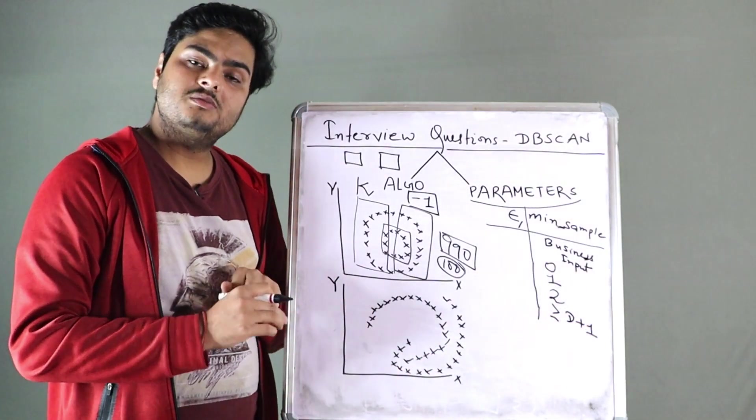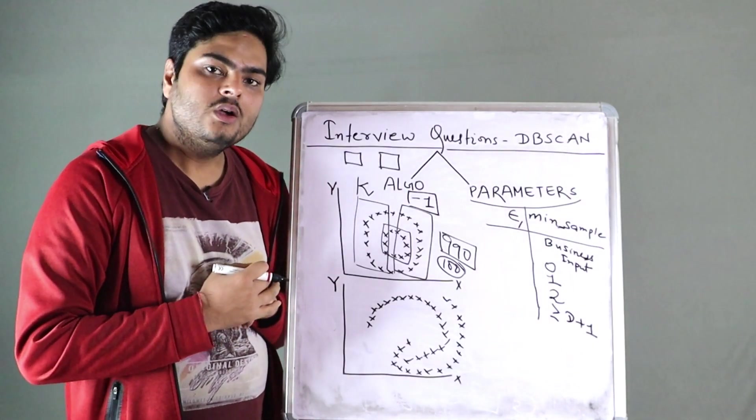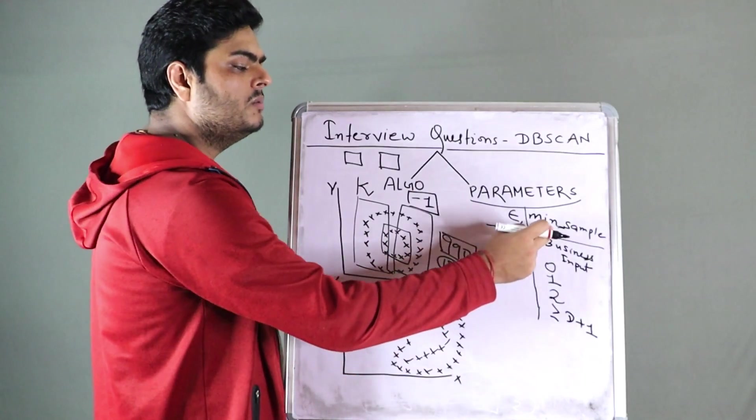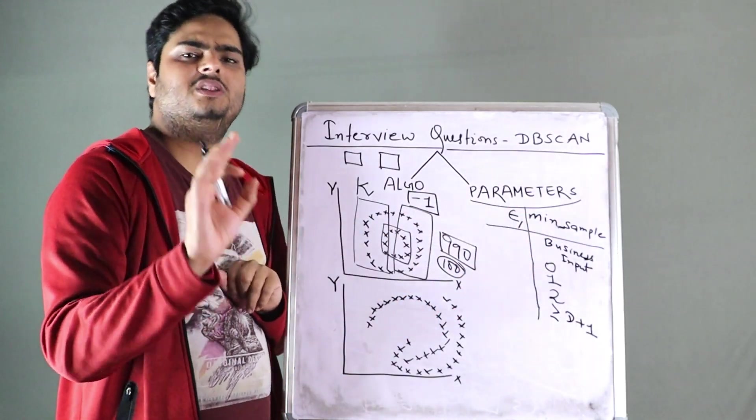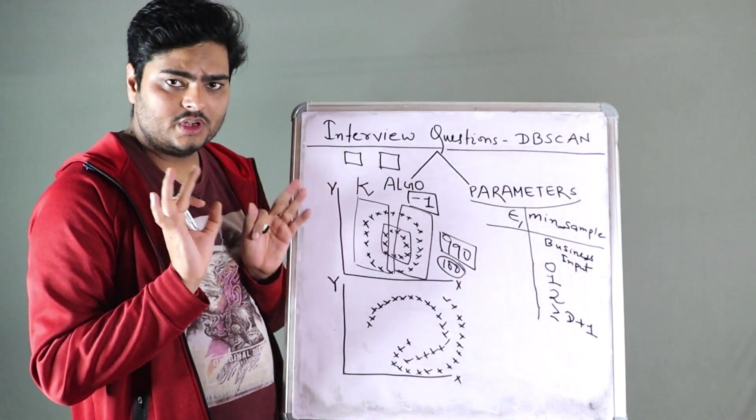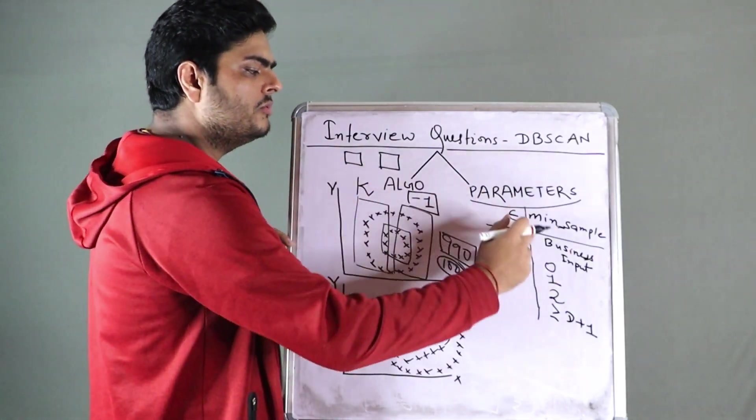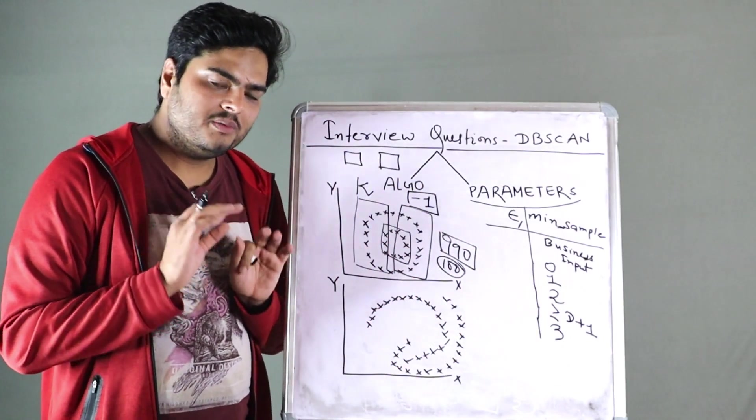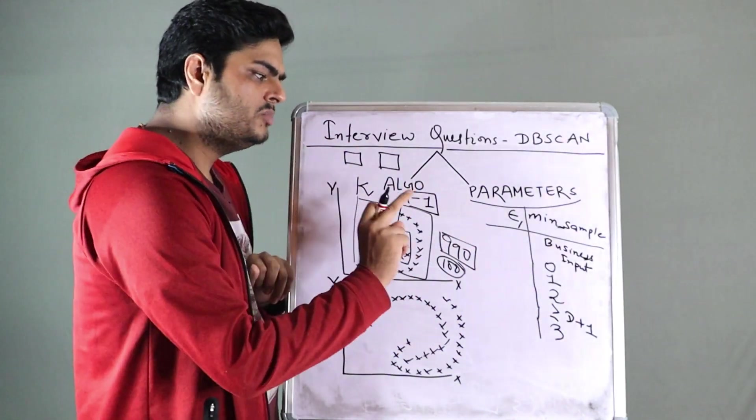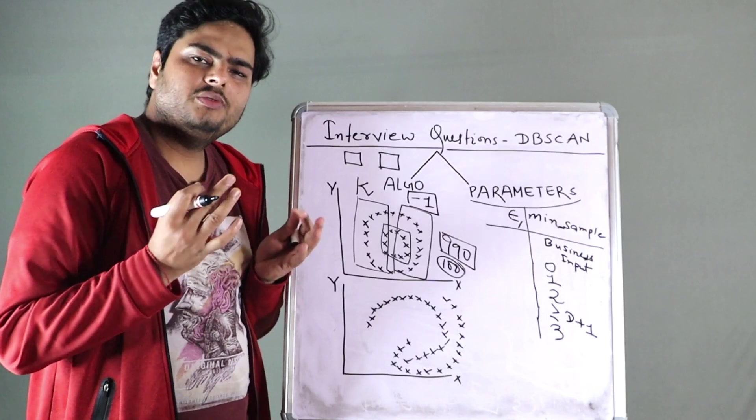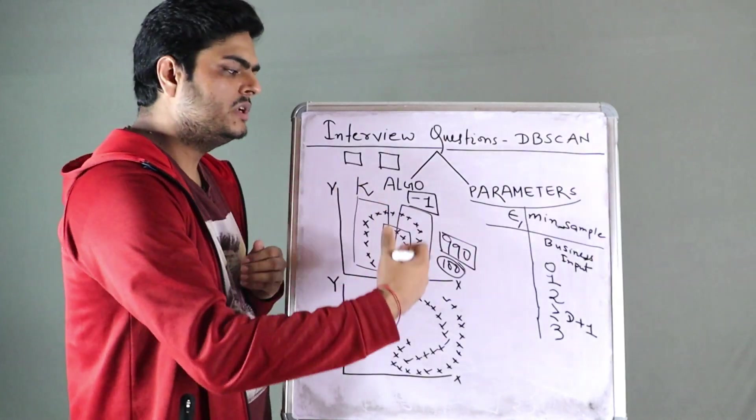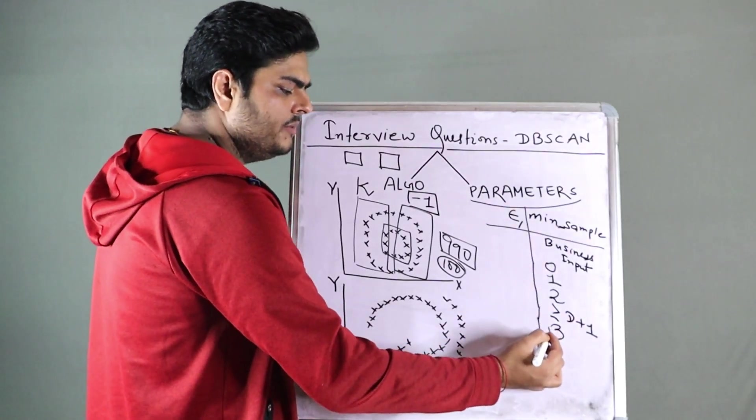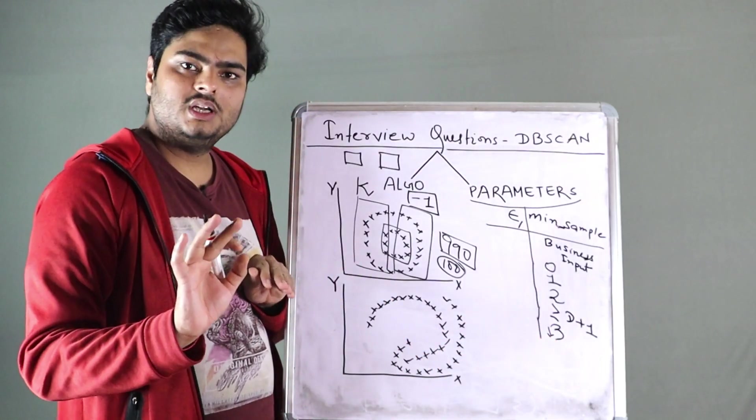D is dimensions. Dimensions means number of features in your data. For example, if I'm calling here two features, then my minimum number of samples should at least be three, at least. So minimum number of samples should start from three. And remember, if you do not have any business input, if you do not know, if you have no idea of what, what you should put here, just remember two things. You should start with three. Less than three, you should not keep.